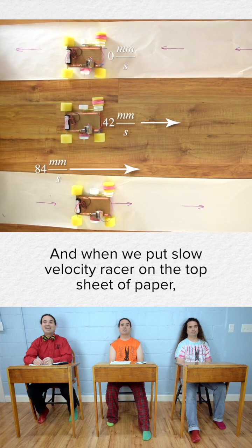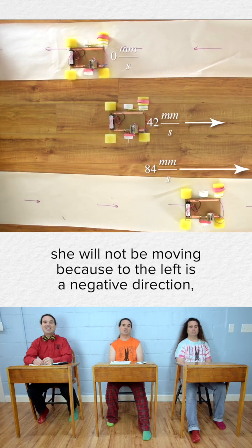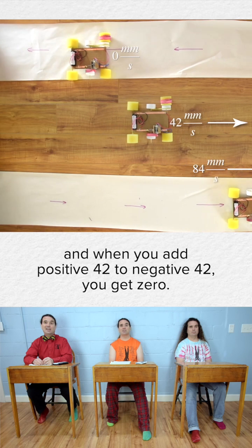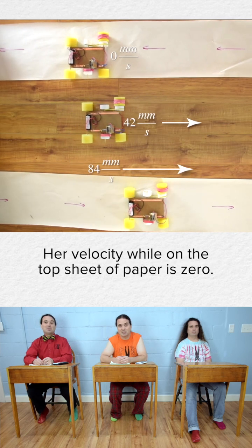When we put Slow Velocity Eraser on the top sheet of paper, she will not be moving because to the left is in a negative direction. When you add positive 42 to negative 42, you get zero. Her velocity while on the top sheet of paper is zero.